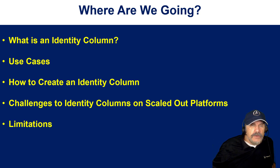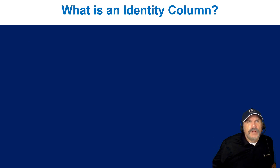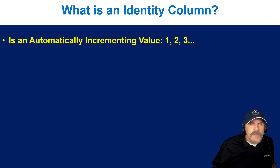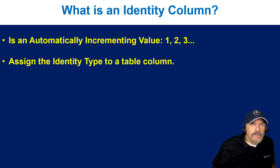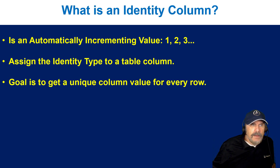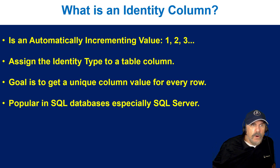So what is an identity column? It is an automatically incrementing value, like 1, 2, 3, and you assign the identity type to a table column. The goal of using identity columns is to get a unique column value for every row, and they're very popular in relational databases, especially SQL Server.